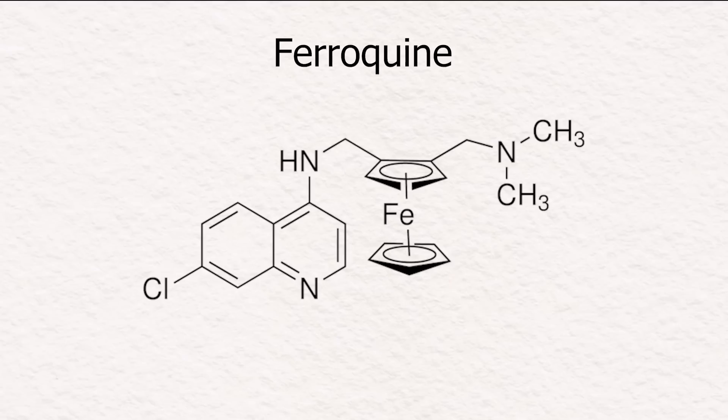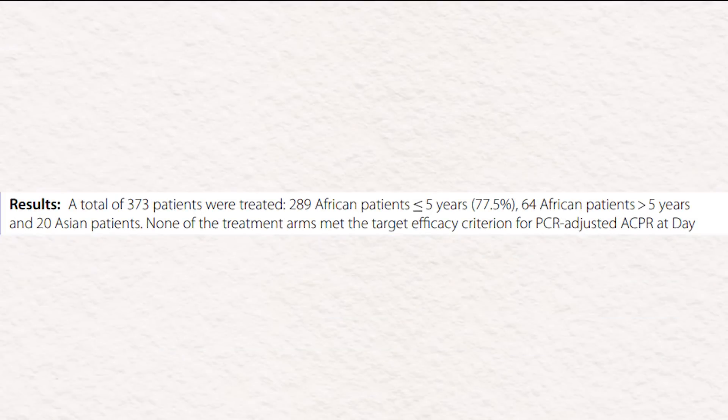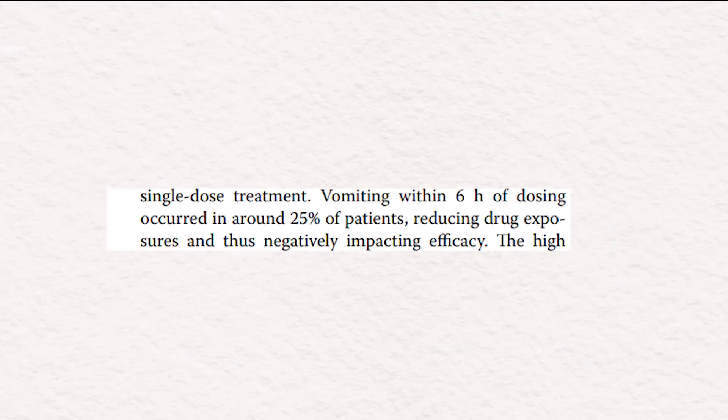One metallocene, called ferroquine, was gaining attention as a potential antimalaria medicine. But a recent study found that the effect didn't meet the standards to be considered a medicine. And it even caused 25% of the people to vomit within 6 hours of taking the medicine, which likely even hindered uptake and recovery.